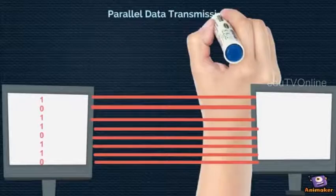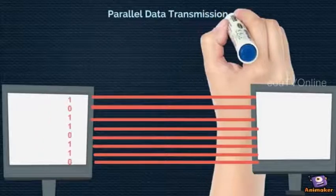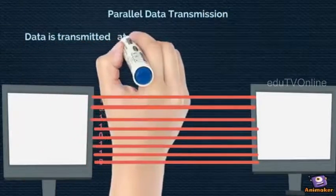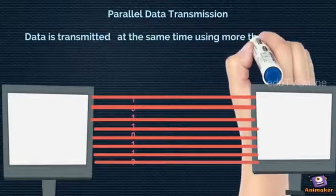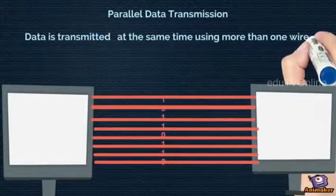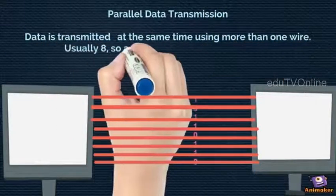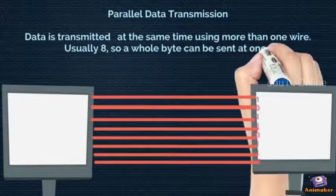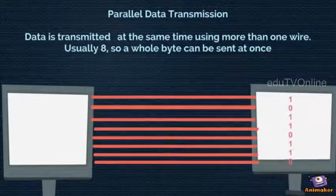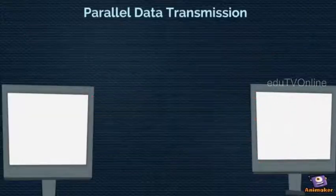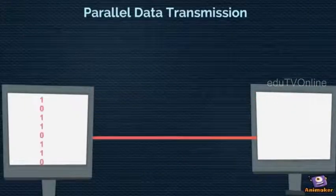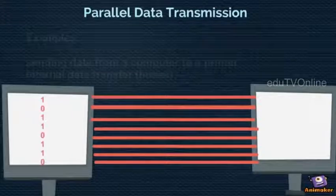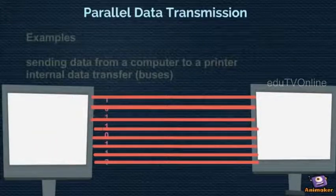In parallel data transmission, several bits of data — usually one byte — are sent down several wires or channels at the same time. One wire or channel is used to transmit each bit.